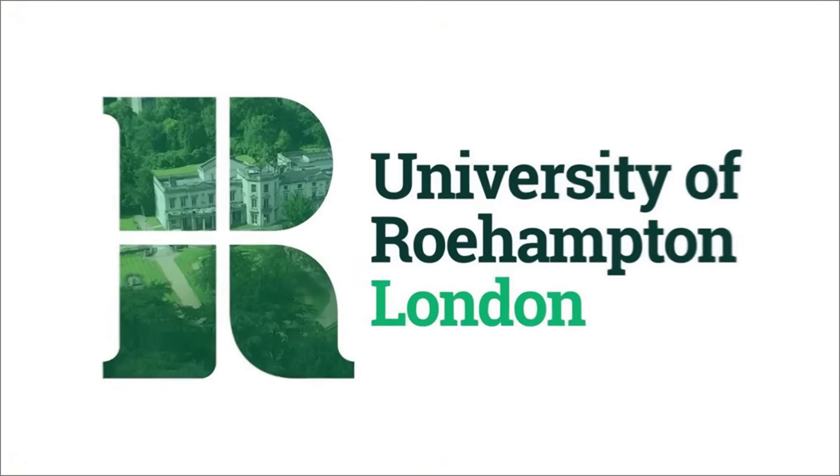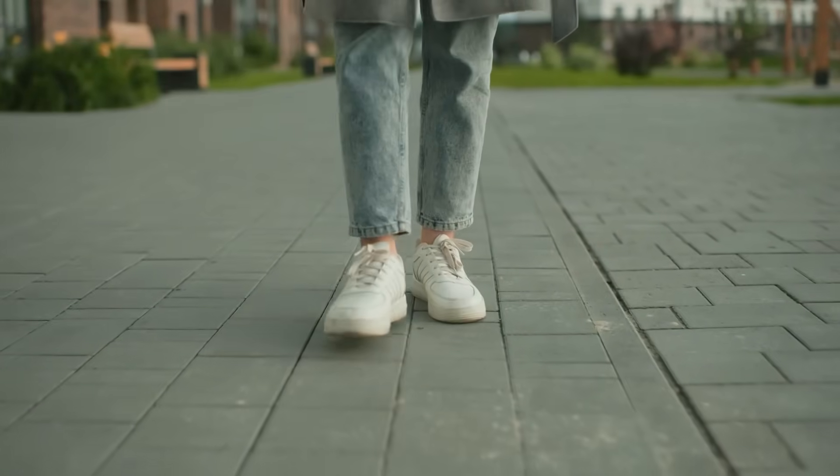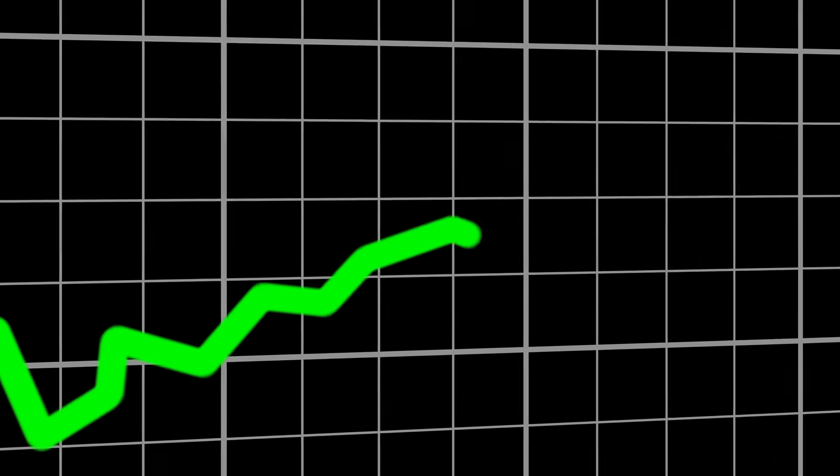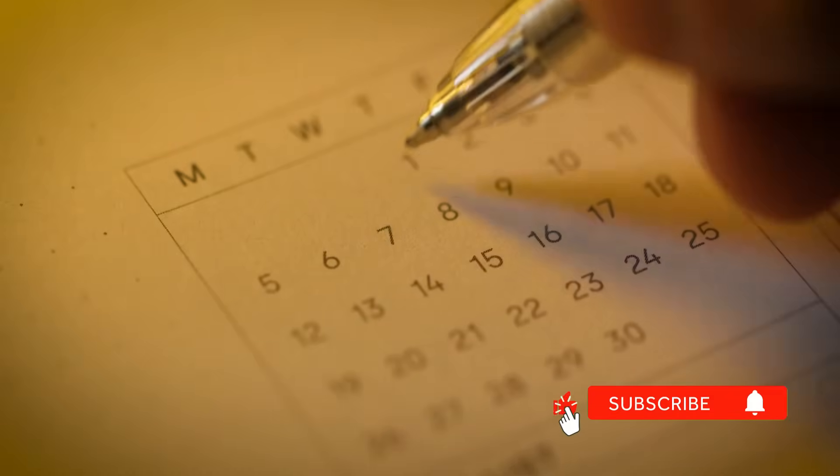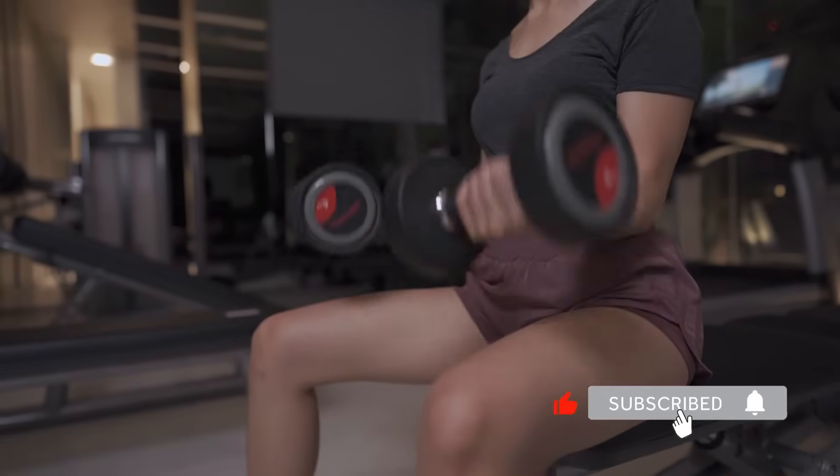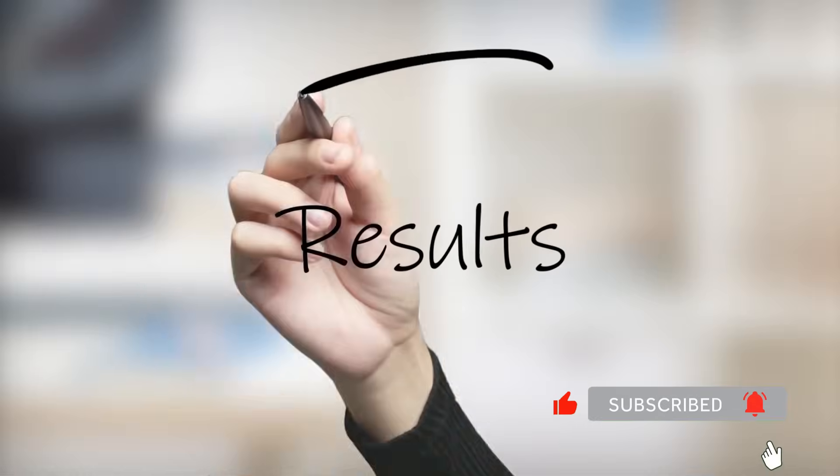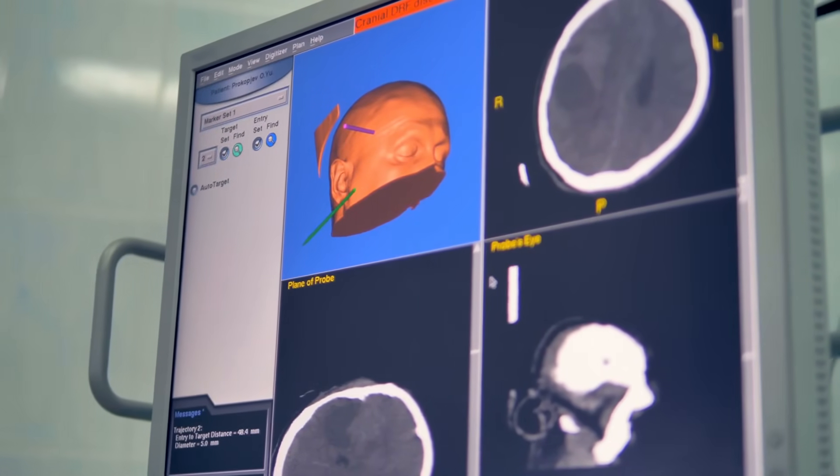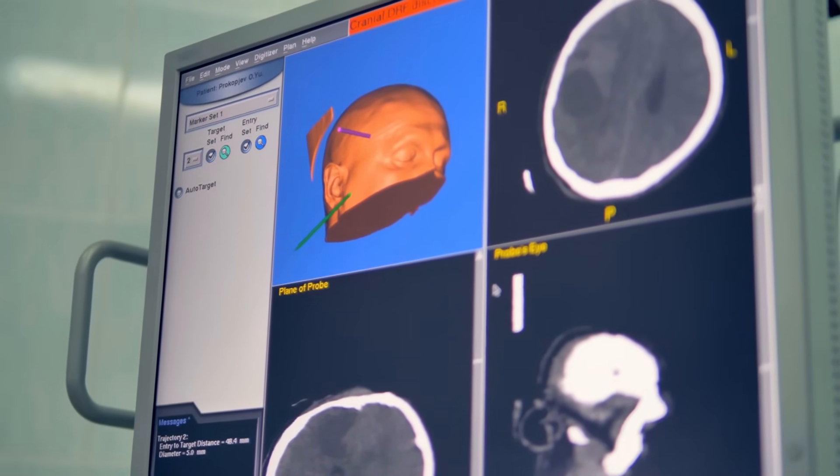Studies from the University of Roehampton found that people who walked backwards for just five minutes showed a 30% improvement in working memory immediately afterward. Not after weeks of practice. Immediately. Same body, different direction, completely different brain state.